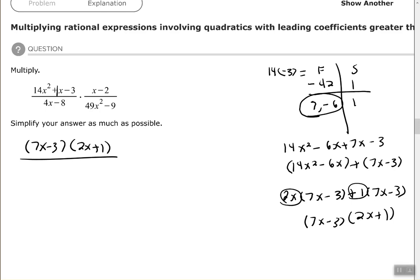So I need to factor out a four from the four x and the eight. So if I divide each one of those by four, that leaves me with x minus two. Okay. Other numerator, there's nothing I can factor out.